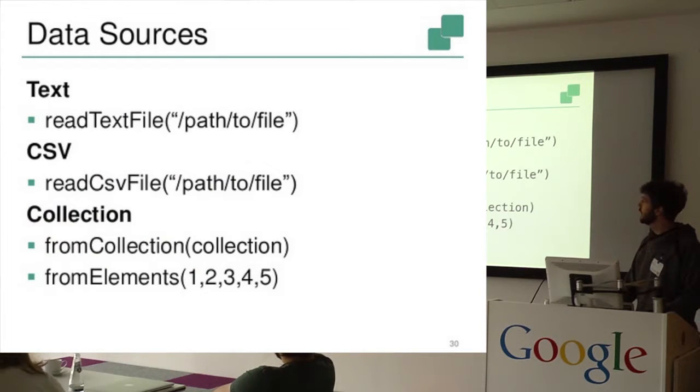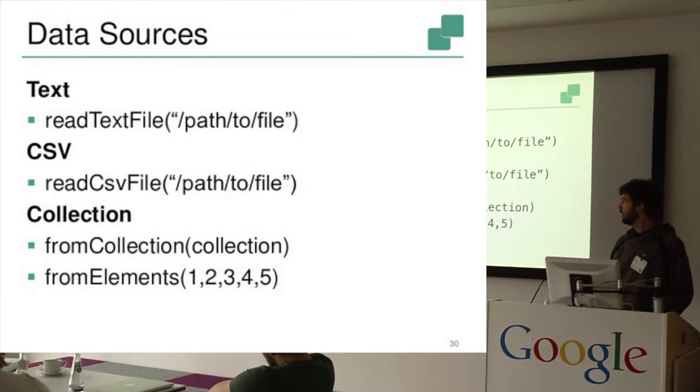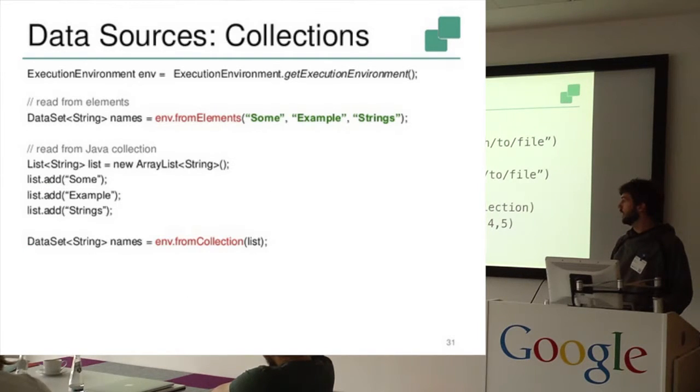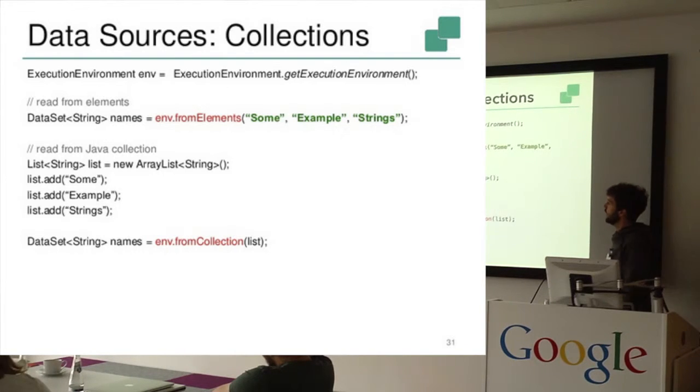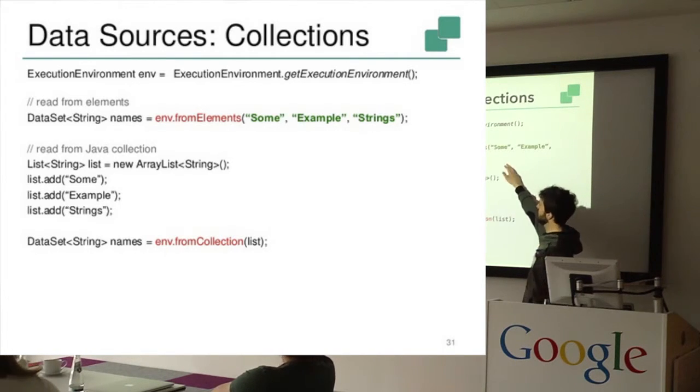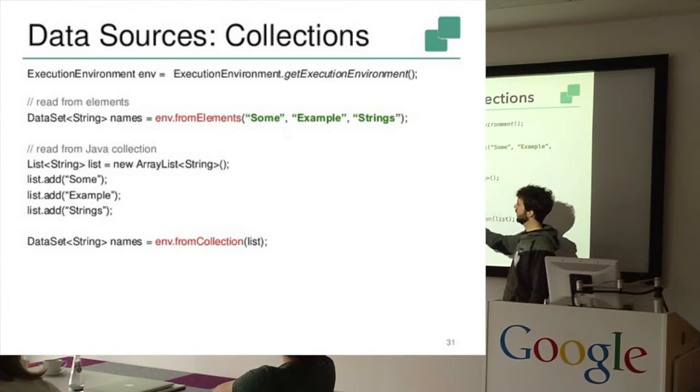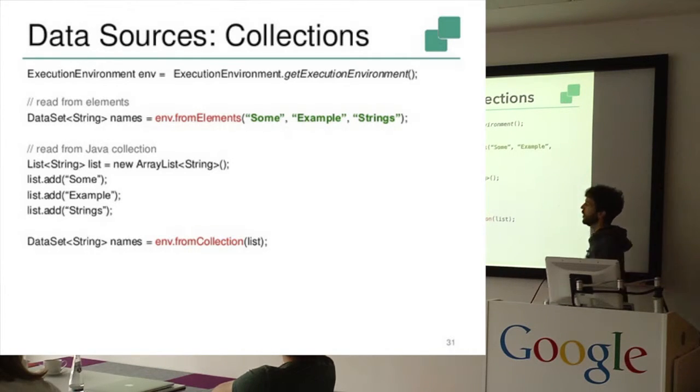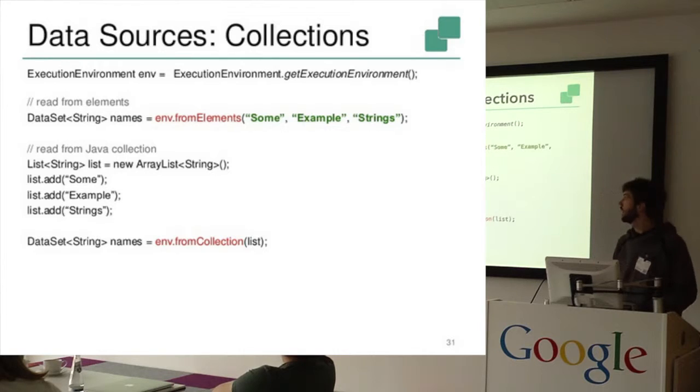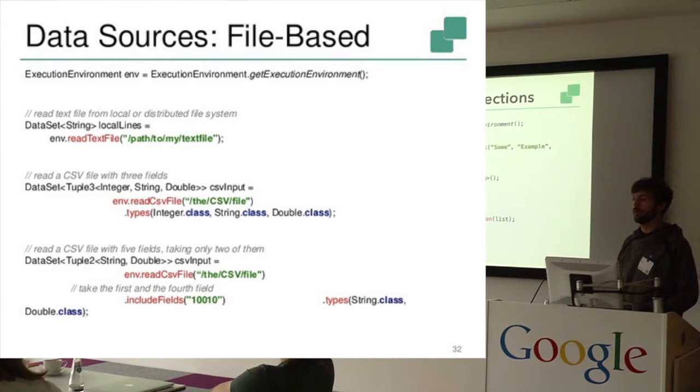So yeah, for data sources, we have this read text file and read csv file, and we can directly create also a data set from collections and elements. Just a brief demonstration again. So here from elements takes for example just a list of strings, and then you have a data set of strings. Or you could also create an array list where you add some strings to it, and create a data set using the from collection method. So that's very simple, very handy for trying out programs without reading from a file.